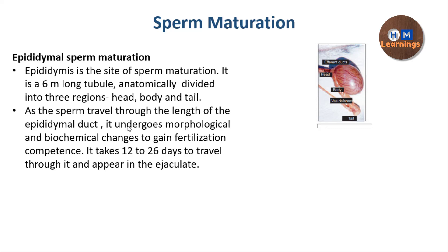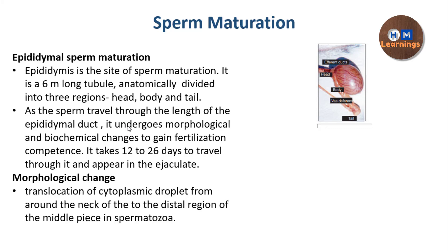The sperm undergoes morphological and biochemical changes during this transit. It takes not minutes but days to complete — around 12 to 26 days — and finally the mature sperm appears in the ejaculate. Let's talk about the changes which are happening during this time and how they facilitate the fertilizing capacity.